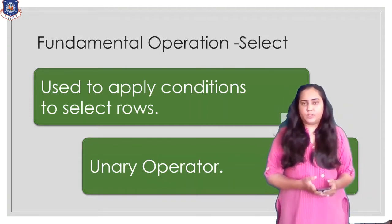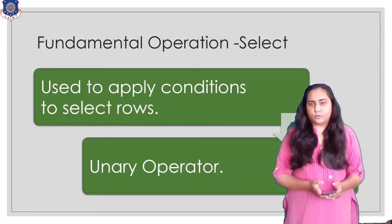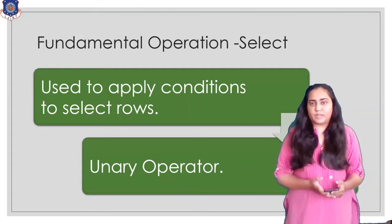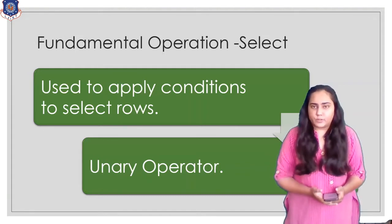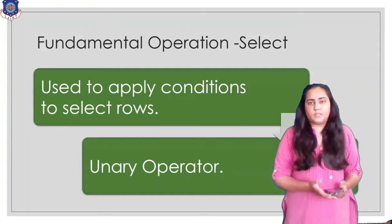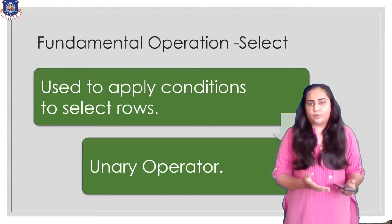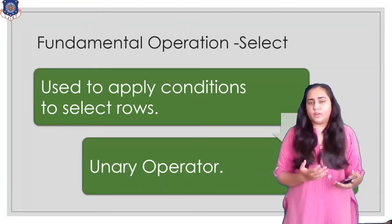The first operation is known as the select operation. It is used to apply conditions to select rows. So whenever you want to select some rows and eliminate certain rows based on some condition, you will use the select operation. This is a unary operation, meaning it requires only one operand to work with.